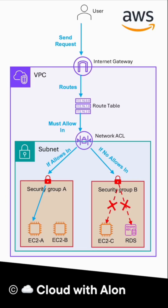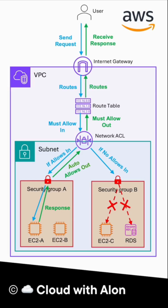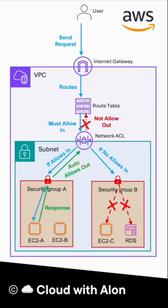Once the EC2 instance processes the request, it sends a response. The security group automatically allows the response because it is stateful. The response then passes back through the NACL. But since the NACL is stateless, it needs an explicit outbound rule to allow the response — then only the user will receive the response. If the NACL has only inbound rules and no outbound rule, the response will be blocked at the NACL and the user will never receive the response, even though the EC2 sent it.